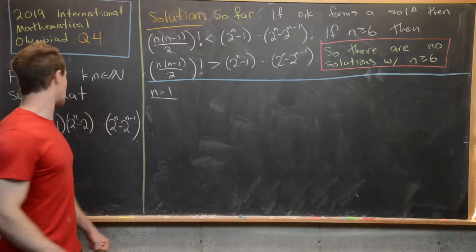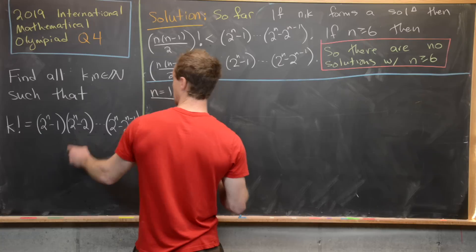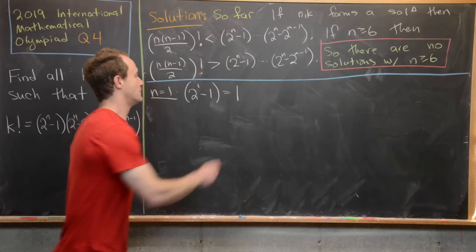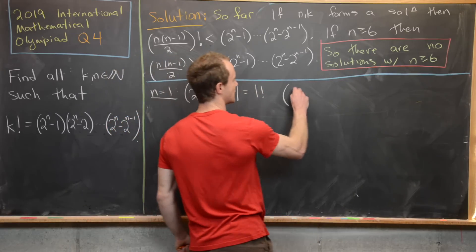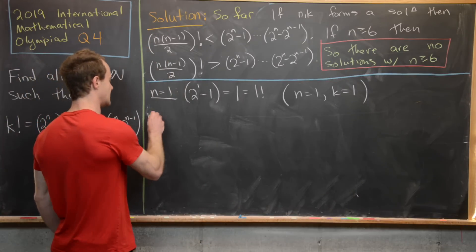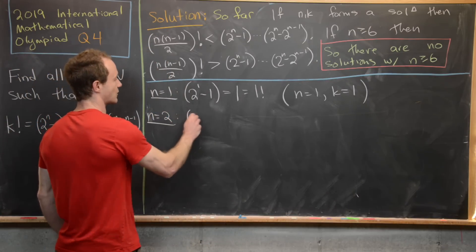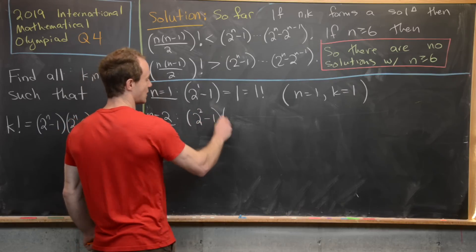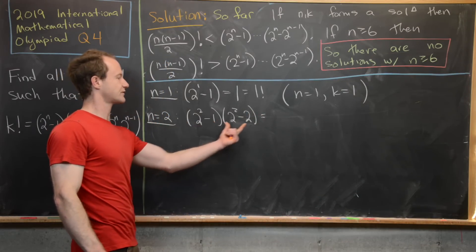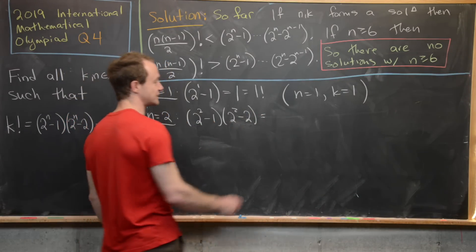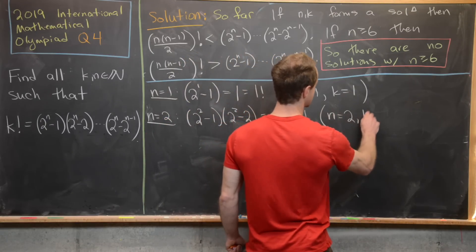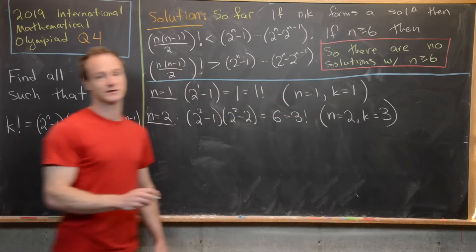For n equals one, that's just two to the one minus one, which equals one — and that's exactly one factorial. So n equals one, k equals one is a solution. For n equals two, we have two squared minus one times two squared minus two, which is three times two, giving us six. And six equals three factorial, so n equals two, k equals three is another solution.